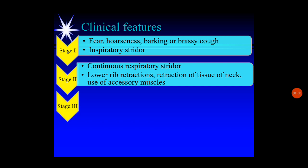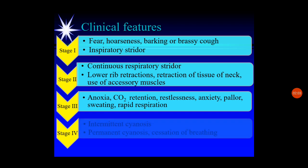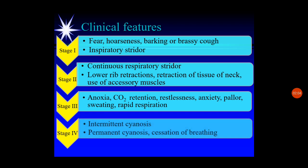In stage three, manifestations include anoxia, carbon dioxide retention, restlessness, anxiety, pallor, sweating, and rapid respiration. In the final stage four, the person progresses to respiratory failure with intermittent cyanosis, which later becomes permanent cyanosis and cessation of breathing.